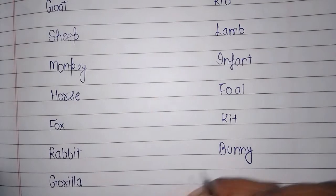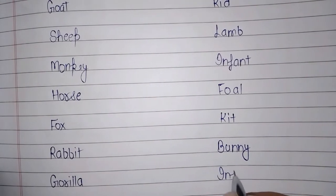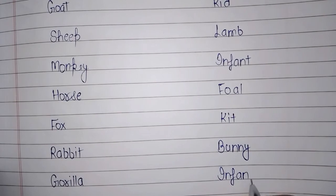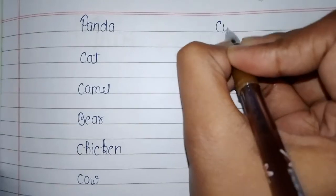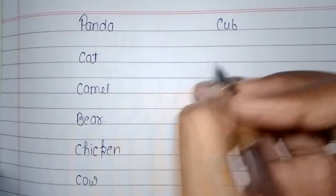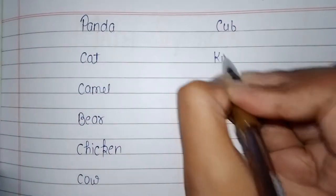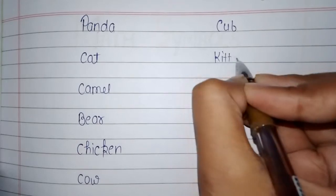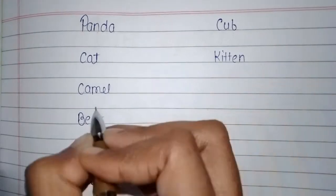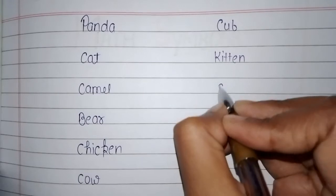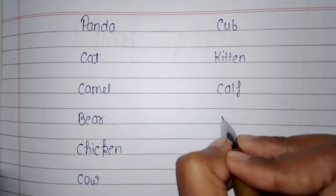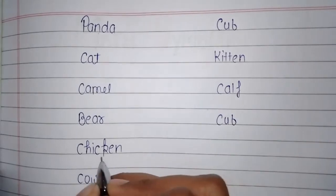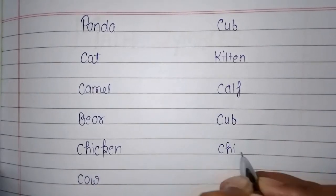Gorilla — infant, panda — cub, cat — kitten, camel — calf, bear — cub, chicken — chick.